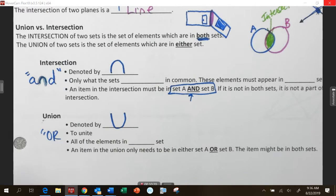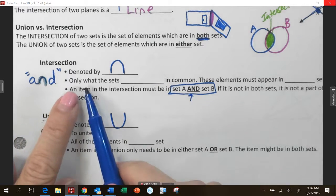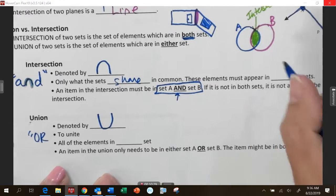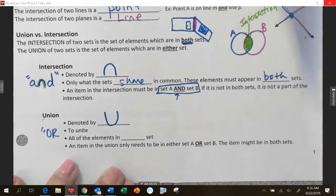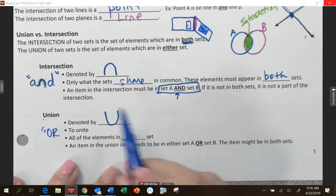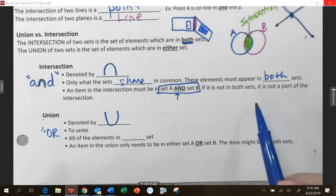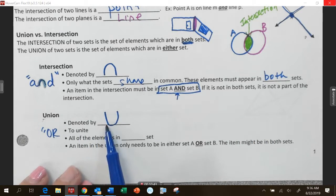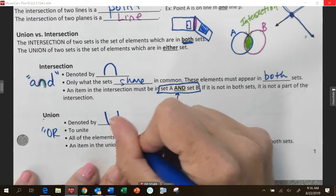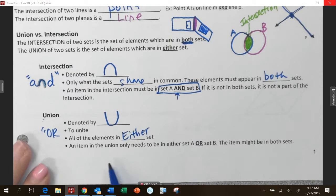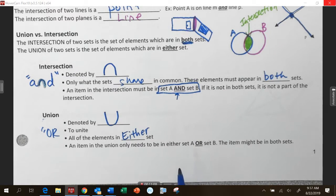So, intersection is only what the sets share in common. These elements must appear in both sets. And then I said an item has to be and. Has to be both in this one and in that. If it's not in both sets, it's not part. Union has the U shape. It means to unite, to bring it all together. All of the elements in either set. All the siblings in either family come together and become this new family. An item in the union only needs to be in either set. And also it could be in both sets.